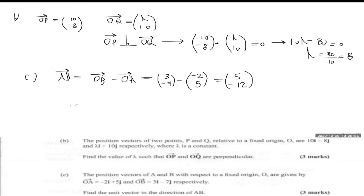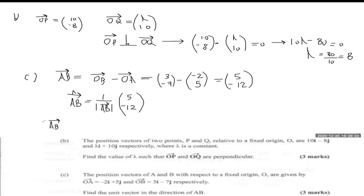The unit vector AB is equal to 1 over the modulus of vector AB, times vector AB. The magnitude of vector AB equals the square root of 5 squared plus negative 12 squared, which is the square root of 25 plus 144, equals the square root of 169, which is 13. So the magnitude of vector AB is 13.